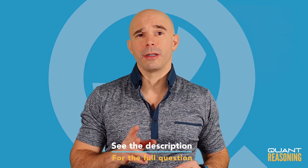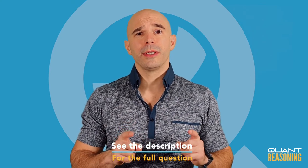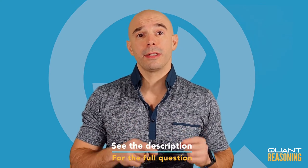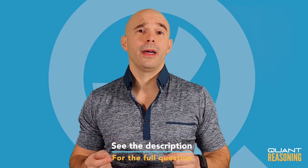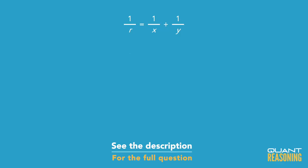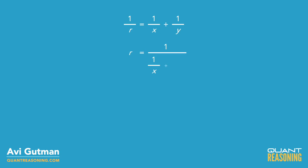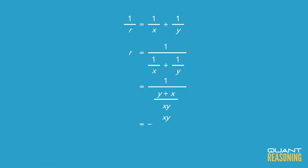The reciprocal of r is equal to the sum of the reciprocals of x and y. You can solve this algebraically. Start by flipping it all, so you'd have r equals 1 divided by 1 over x plus 1 over y, then we need a common denominator there, and finish it off from there. Remember that 1 divided by some fraction will just give us the reciprocal of that fraction.